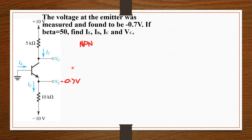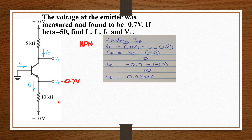Now that we have an NPN transistor, we can find IE. VE is negative 0.7 volts, the supply voltage is negative 10 volts, and the resistor is 10 kilo ohms. So: VE minus negative 10 equals IE times 10. Making IE the subject, we get VE minus negative 10 over 10, which gives IE equals 0.93 milliamperes.